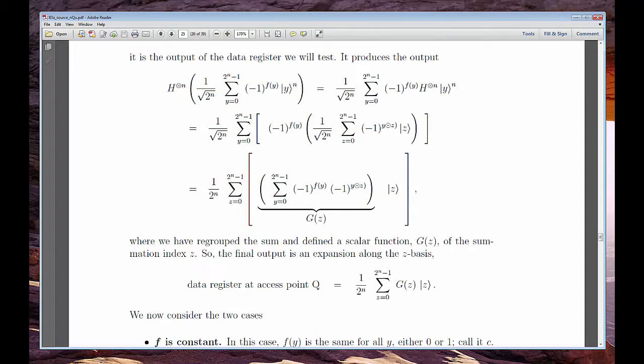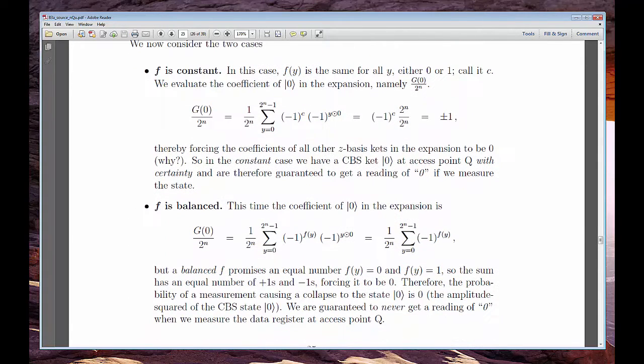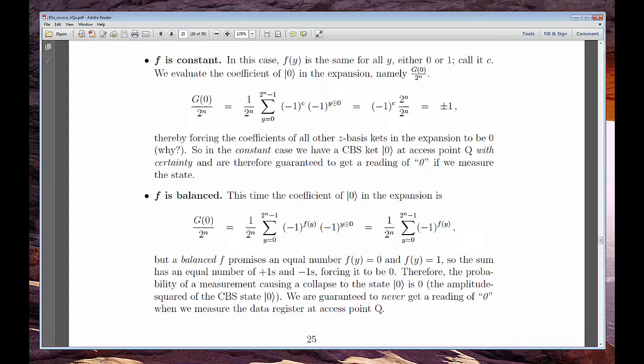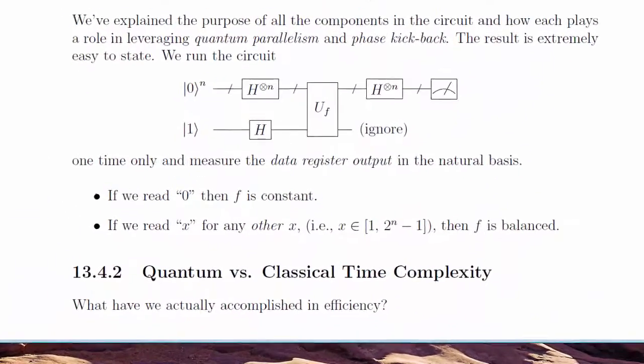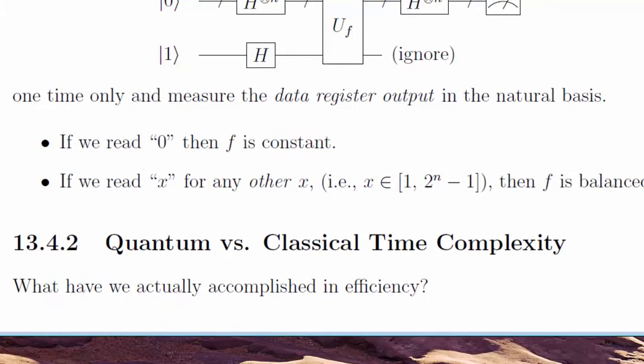As with its little brother, it does so in only one evaluation of the oracle. Meanwhile, as the number of bits n grows, the number of evaluations needed for a classical solution is of the order 2 to the n. It's classically exponential, yet quantum constant.